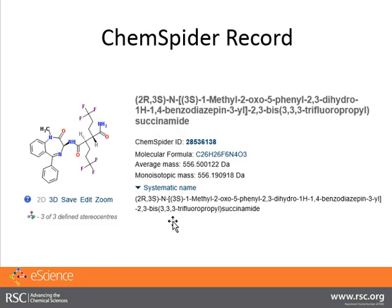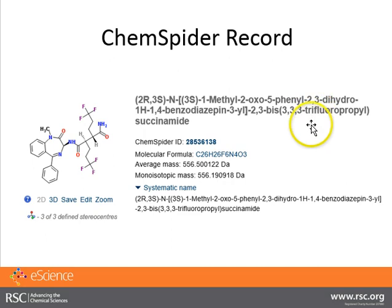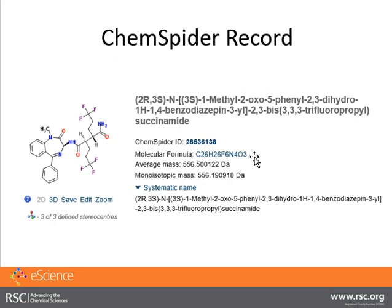This is what it looks like. It gives you some warning flags — three of three defined stereocenters, which it should have; they're absolute. The systematic name is generated using software we have in-house. The molecular formula is put together by assembling the number of carbons, protons, etc. We calculate the average mass, the monoisotopic mass, and a whole set of other physicochemical properties.